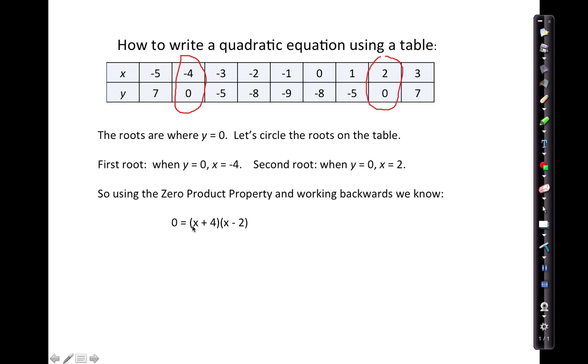Because if I plug in negative 4 in for x, negative 4 plus 4 equals 0. So according to the zero product property, that would be one of the solutions, x equals negative 4, according to our table. And the other solution would be x equals 2, because 2 minus 2 is 0. So using the zero product property, I can write the equation setting it equal to 0.